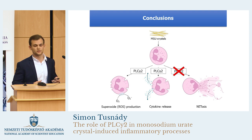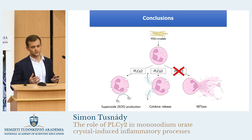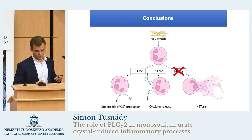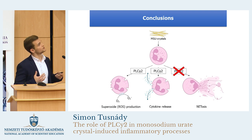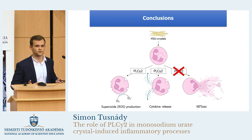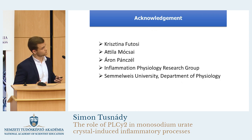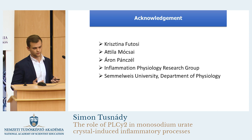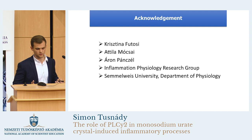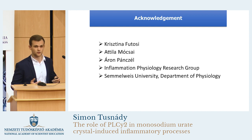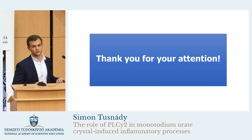So in conclusion, it can be stated that PLC gamma 2 has a significant role in the urate crystal-induced superoxide production and cytokine release, but PLC gamma 2 does not have a role in the urate crystal-induced process of NETosis. These results may contribute to the better understanding of the pathomechanism of gout. I am thankful for my mentors, Krisztina Futosi and Attila Mócsai, and for Áron Pánczél for his help in the microscopic analysis, and for every member of my research group. Thank you for your attention.